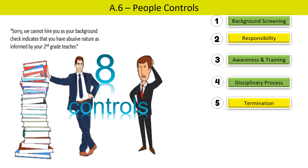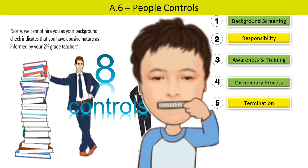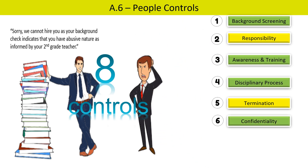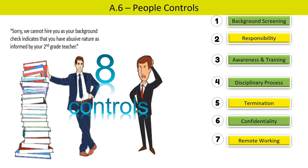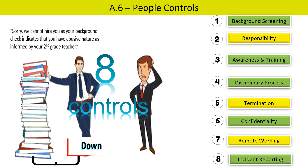The sixth control requires a confidentiality or non-disclosure agreement with relevant personnel and third parties. The seventh control requires a documented policy for remote working — defining what controls apply when employees work from remote locations. The eighth control requires a mechanism to report security events through appropriate channels in a timely manner. Step-wise audit procedures to validate all these controls are available for download from the Udemy resource section.